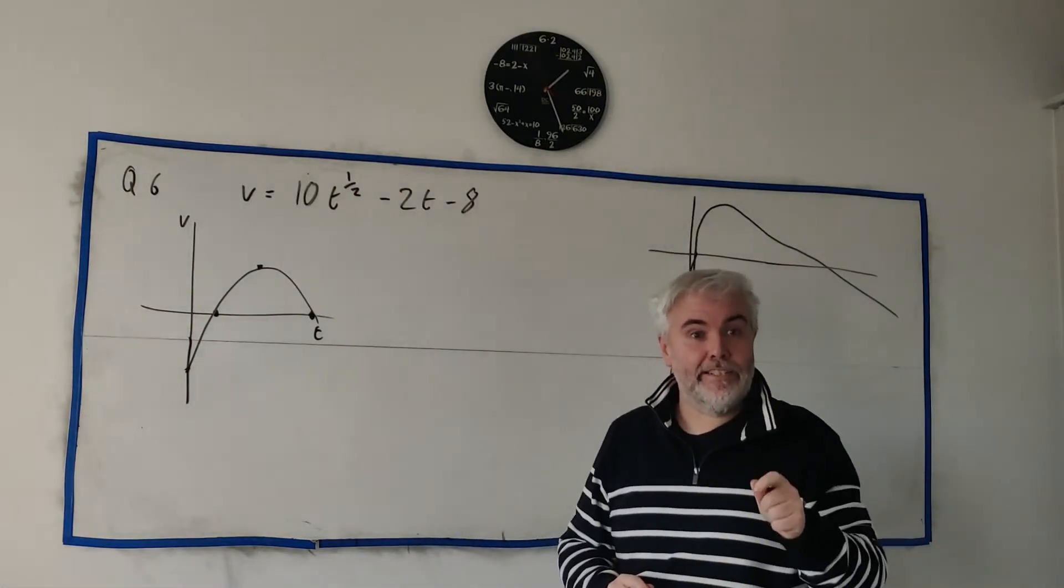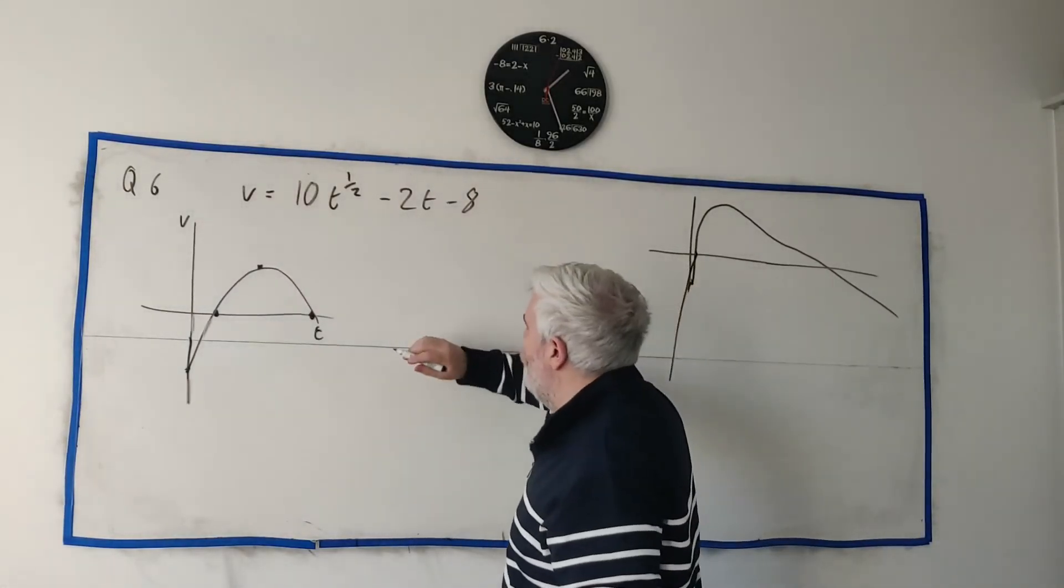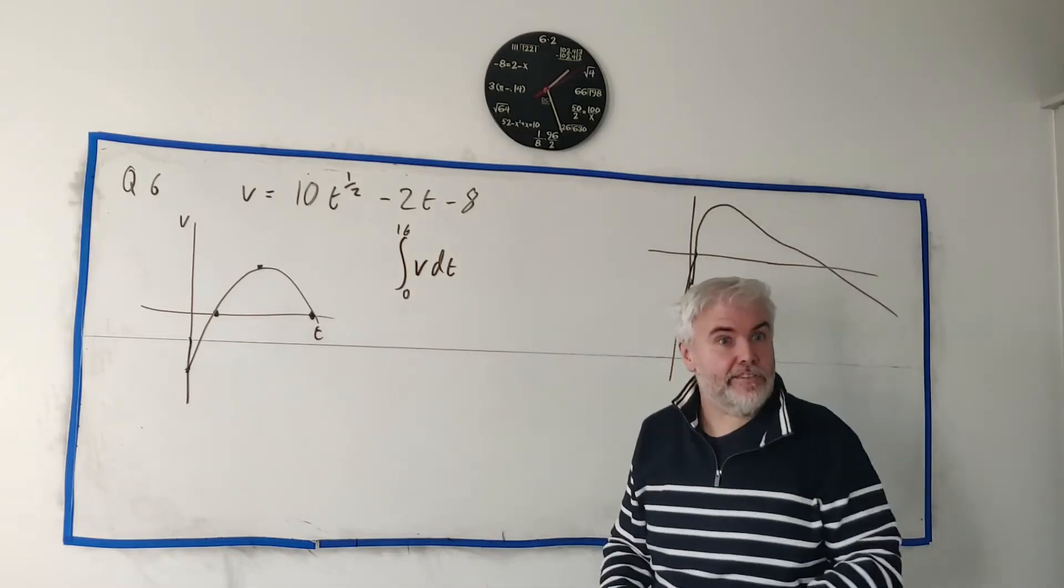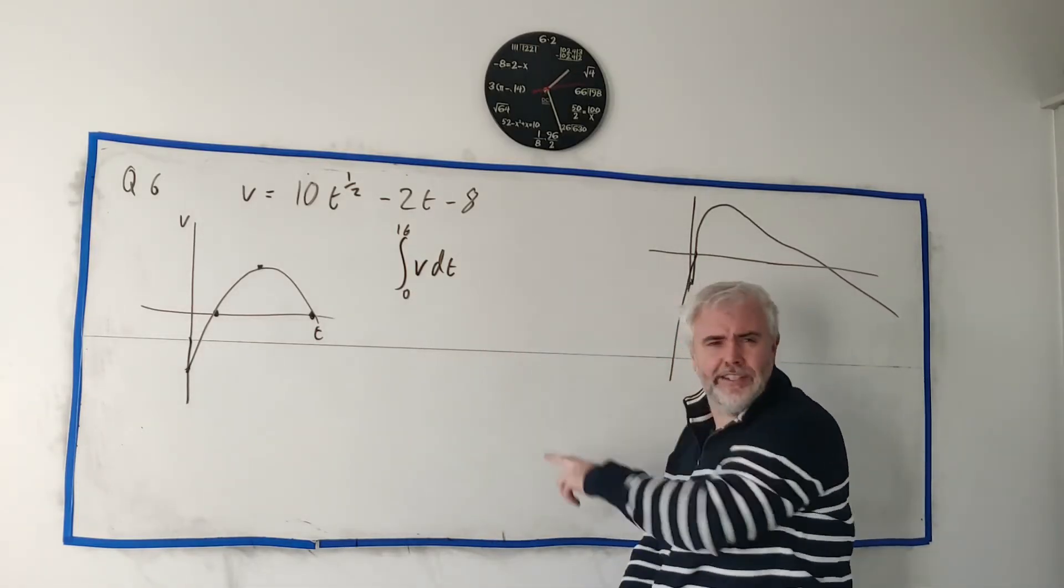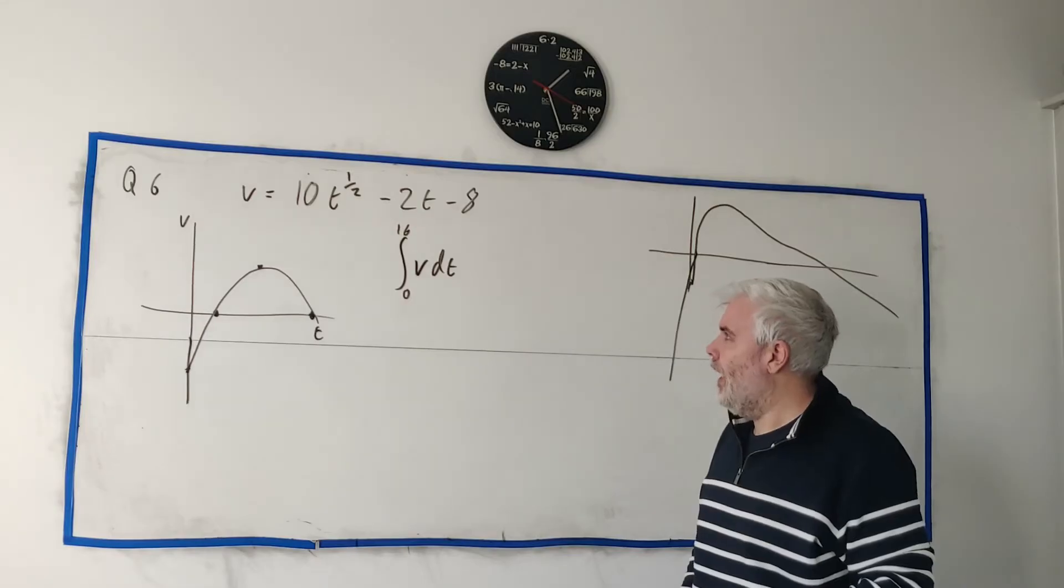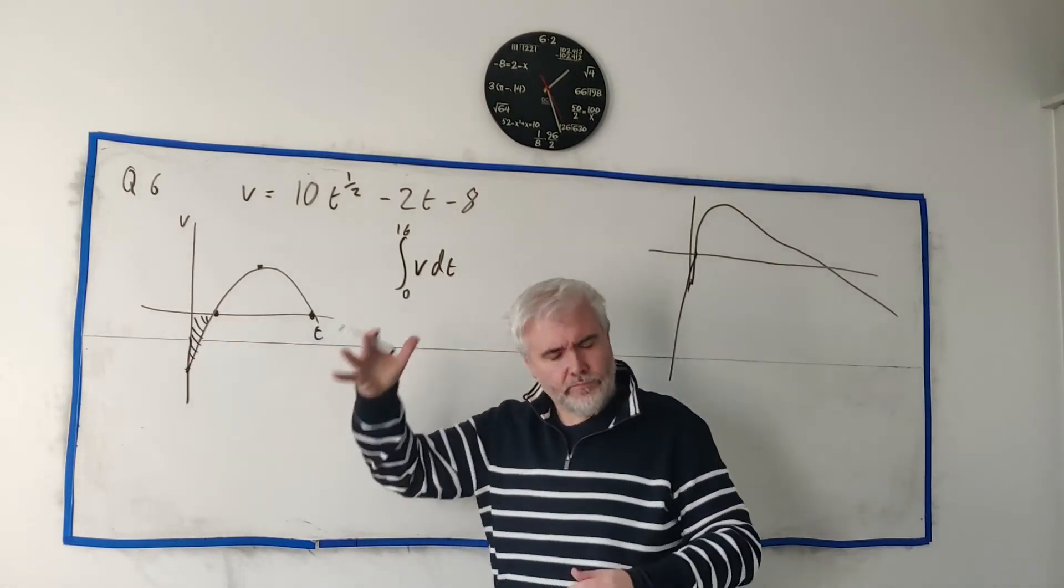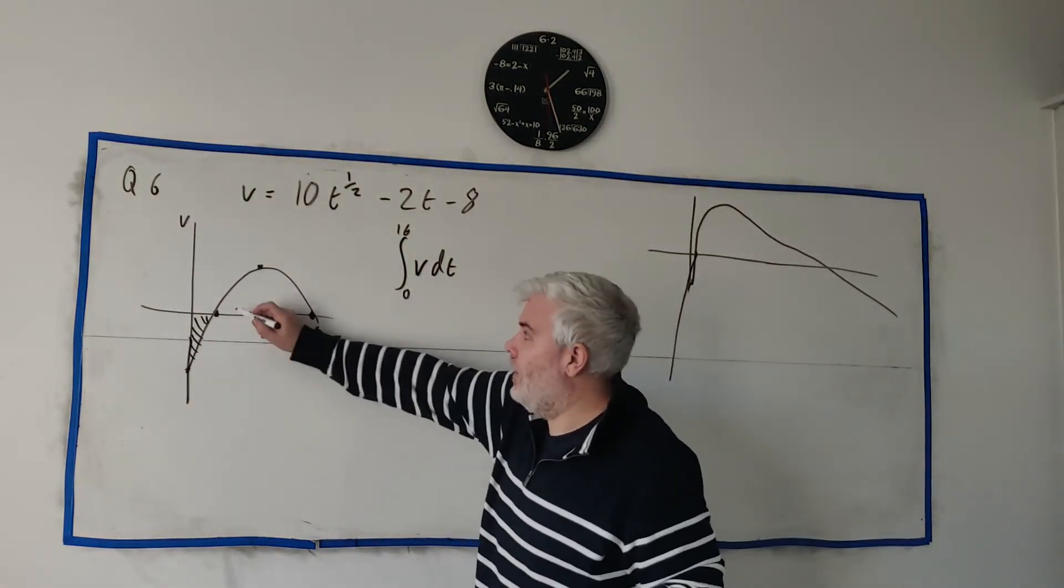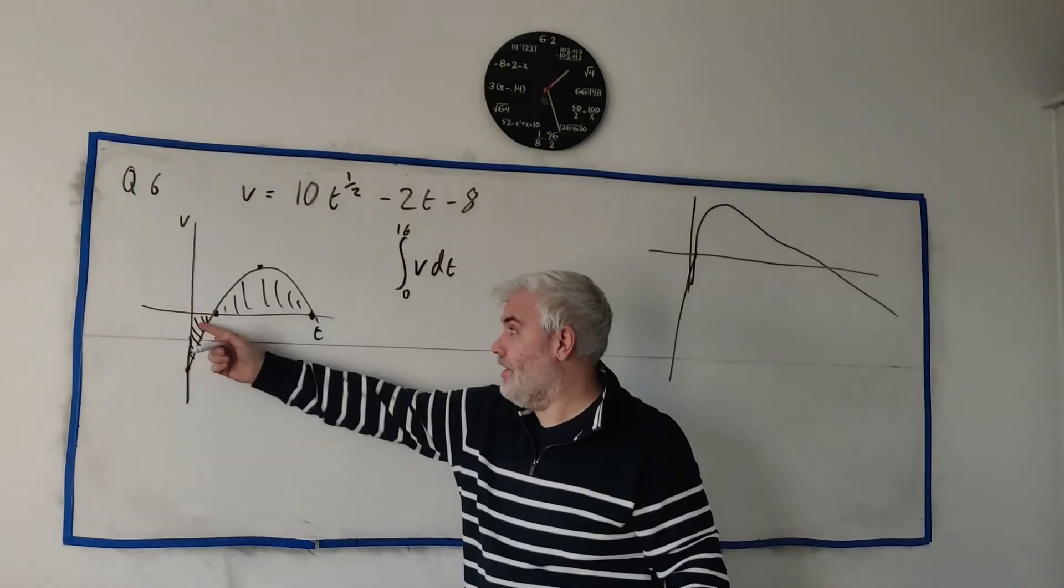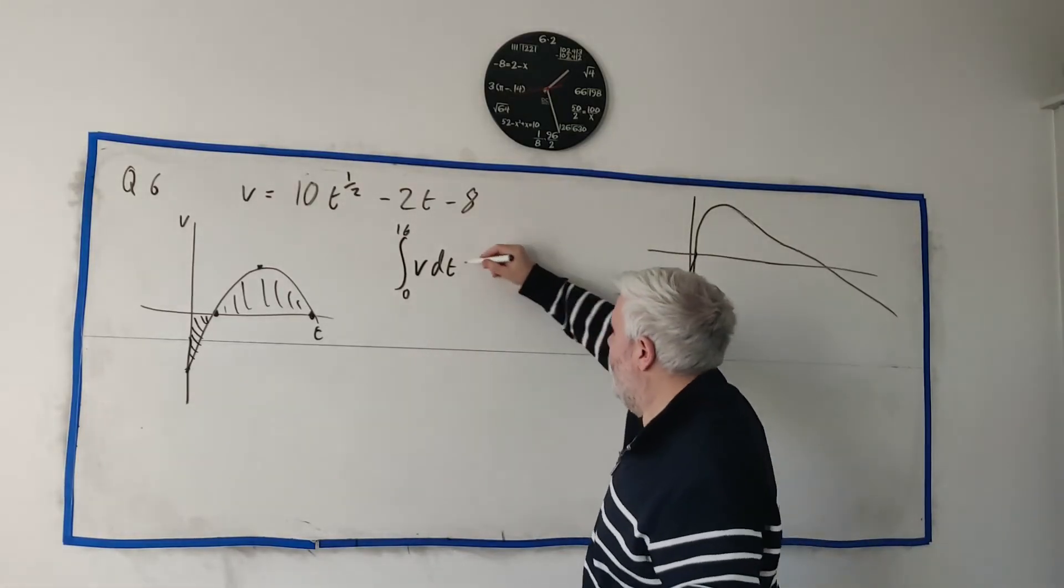But the point here is, in part 2, they ask you to find the distance travelled by this particle. Now, what you should be thinking is integration. So I would expect a lot of students to just go integrate v with respect to t between 0 and 16, get an answer. That's going to be the wrong answer. They will give you marks out of 5. I don't know. Maybe you get 2 out of 5 for that. Maybe 3 out of 5 if you do it all correctly. But you're making a mistake here. You're going to find minus of this area because it's on the bottom. And then you're going to find positive of this area. And doing this is going to add them together. So you're going to lose this. And you're going to lose some of this even. This much area of this one. So you're going to get the wrong answer.